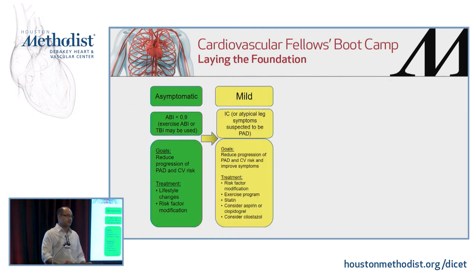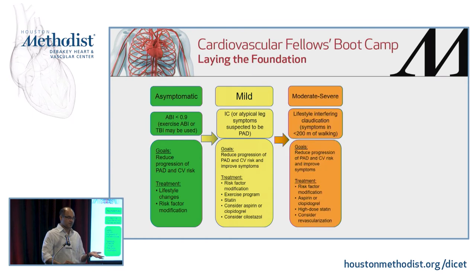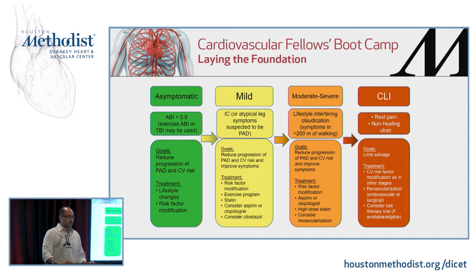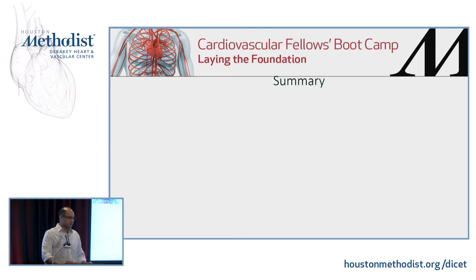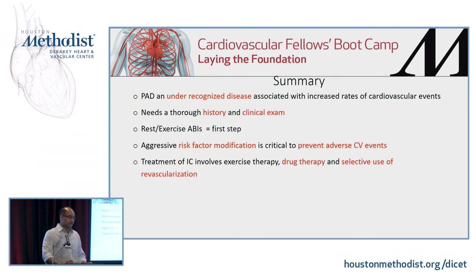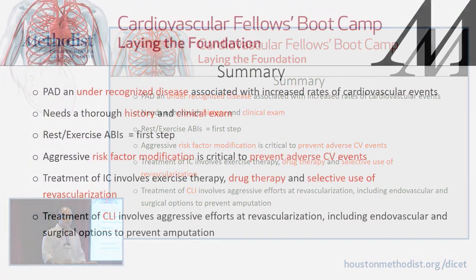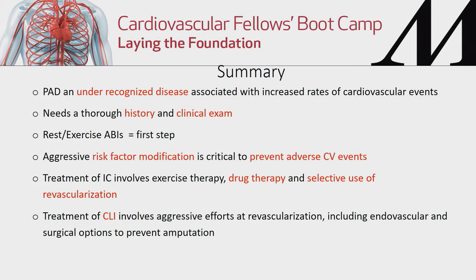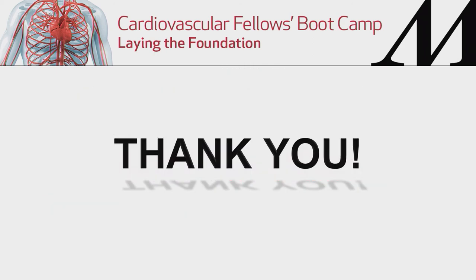In summary: for asymptomatic disease with ABI less than 0.9, you don't do anything even though the ABI is abnormal. If you have mild disease with intermittent claudication, non-operative management is first. If you have moderate to severe lifestyle-limiting claudication, consider some kind of intervention. If you have critical limb ischemia, please consider intervention. Make sure they're medically optimized - statins, glucose control, blood pressure control. Get rest and exercise ABIs as the first step, risk factor modification to prevent adverse cardiovascular events, then selective use of revascularization, including endovascular versus surgical options, to prevent amputation.